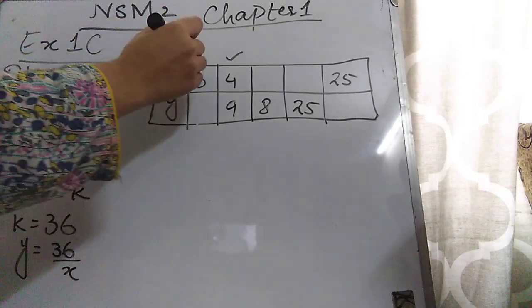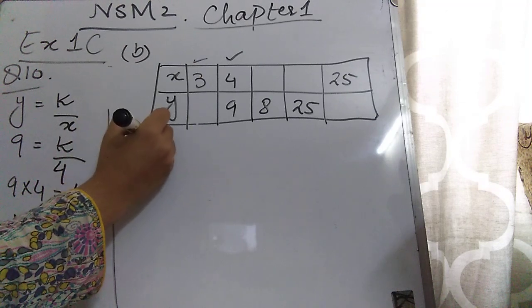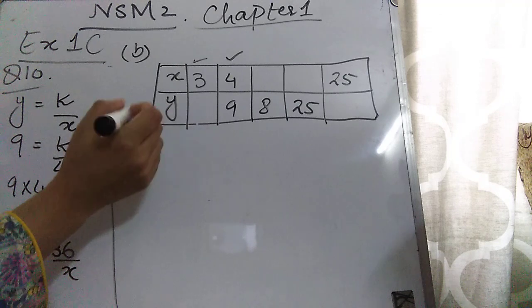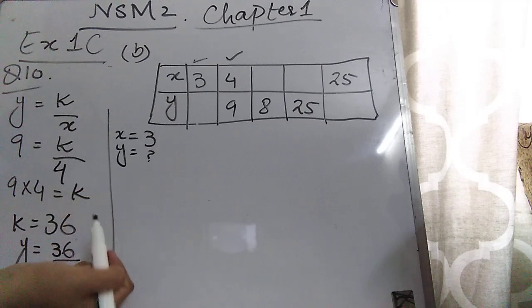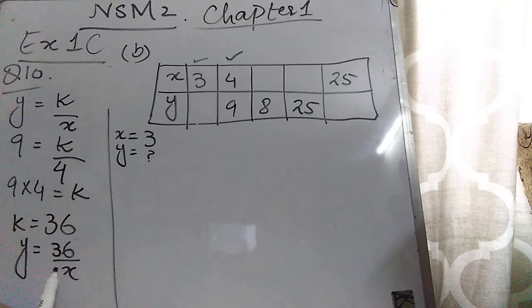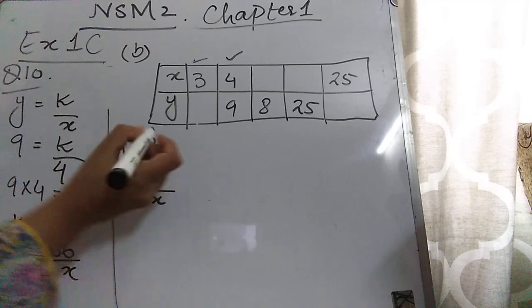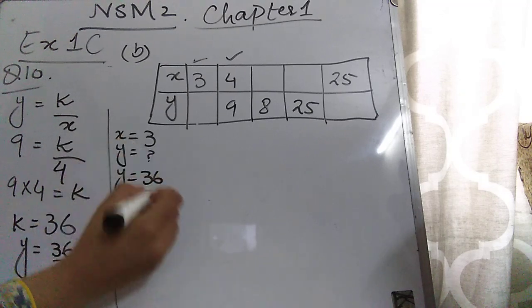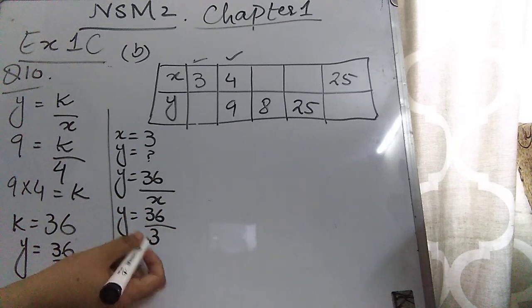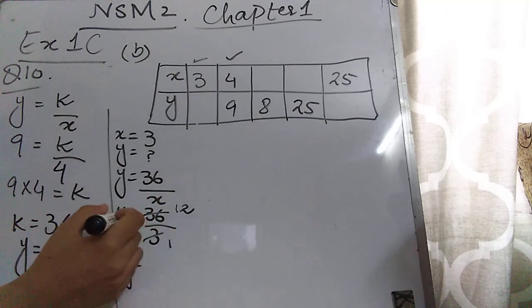Now use the equation y = 36/x to find the missing values. In the first column, the value of x is given as 3 and you have to find y. Put x = 3: y = 36/3. Dividing: 36/3 = 12. So the value of y is 12.